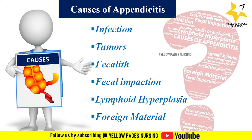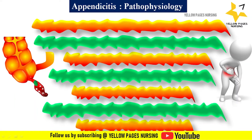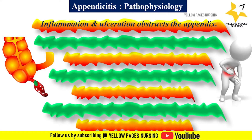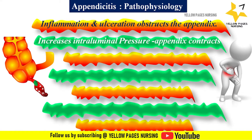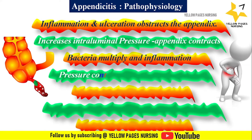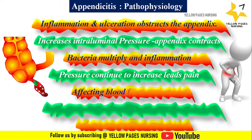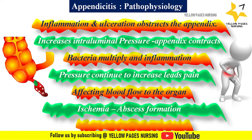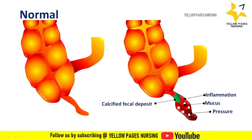In the pathophysiology, due to etiological factors, there is inflammation and ulceration that obstructs the appendix, increasing intraluminal pressure and causing the appendix to contract. Bacteria multiply and cause further inflammation. The intraluminal pressure continues to increase, affecting blood flow to the organ and causing severe abdominal pain. This impaired blood flow results in ischemia, which further causes necrosis, gangrenous appendicitis, perforation, and peritonitis.